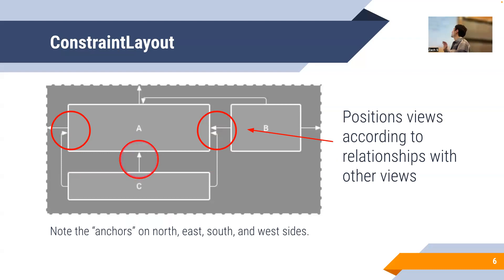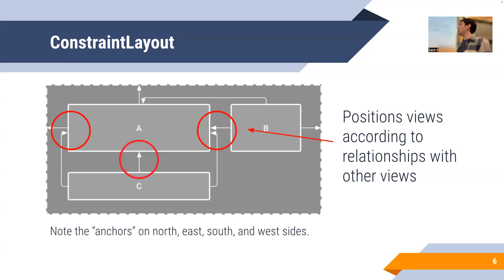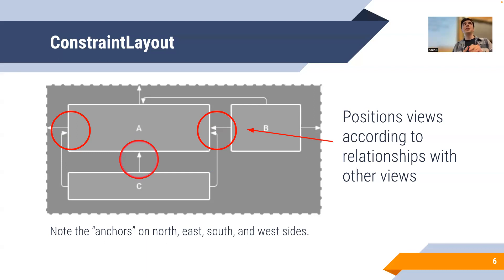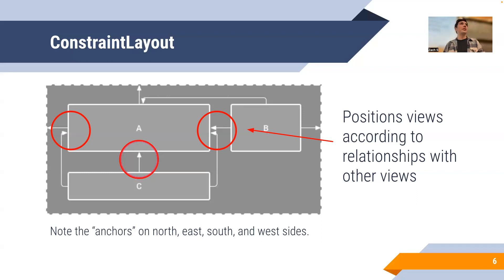Sometimes you want to do things a bit more complicated — this is a little review from last lecture. The idea behind constraint layouts is that you position views according to other views. For example, a text field might always be above a submit button, so the submit button's top constraint is the bottom of the text field, and vice versa. Each side of a view is constrained to another view. This is a really important layout concept.